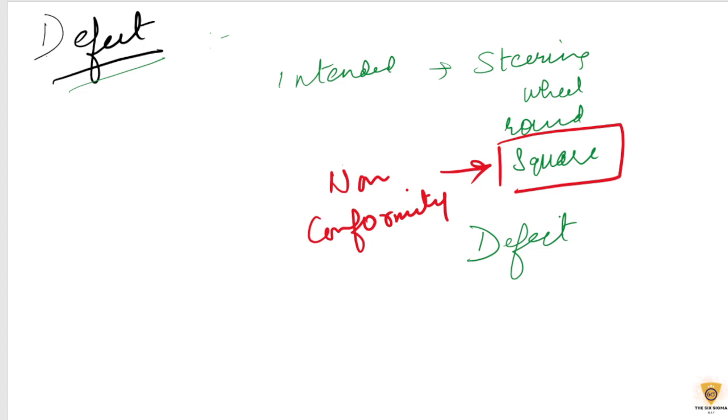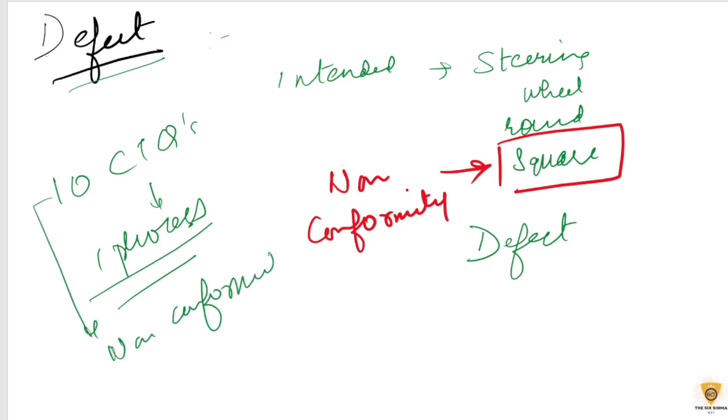In short, if I talk about any event that does not meet the specification of a critical to quality parameter. So if I have ten CTQs in a process, right? Now if even one nonconformity occurs in those ten CTQs, that is a defect for me. There is a defect in that process.